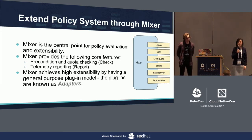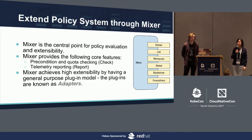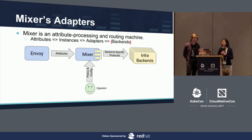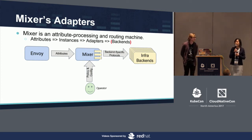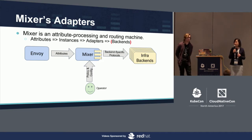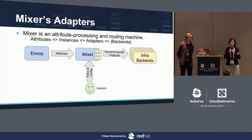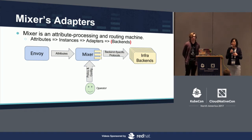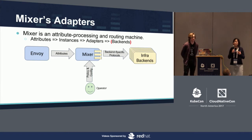Mixer achieves high extensibility by having a general purpose plug-in model — the plug-ins are called adapters. Mixer is an attribute processing and routing machine. Attributes are pieces of metadata that describe the environment and the traffic — for example, request.path, source.ip, source.user, destination.service. Request arrives at Mixer with a set of attributes. Mixer processes these attributes and maps them to adapter input, called instances. Mixer then invokes the adapters based on configuration and passes this input to the adapters.